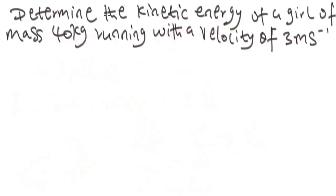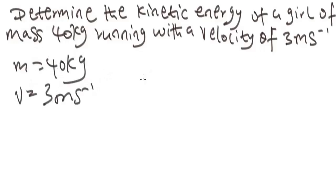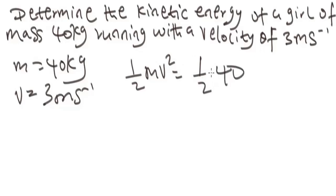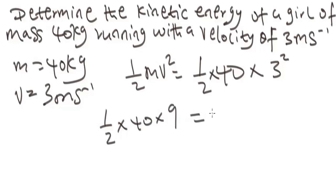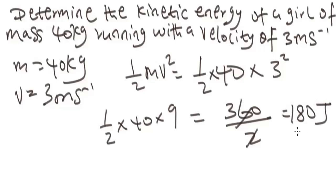This problem asks us to find the kinetic energy of a gear of mass 40 kg moving with a velocity of 3 m/s. Our parameters: m = 40 kg, v = 3 m/s. Using the formula KE = ½mv², we get ½ times 40 times 3² = ½ times 40 times 9 = 360 divided by 2 = 180 joules.